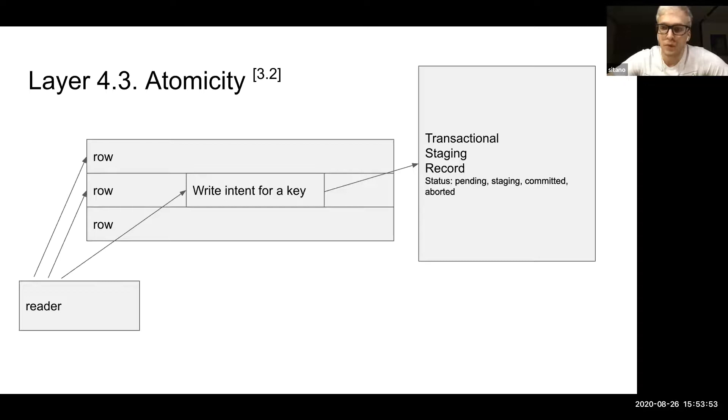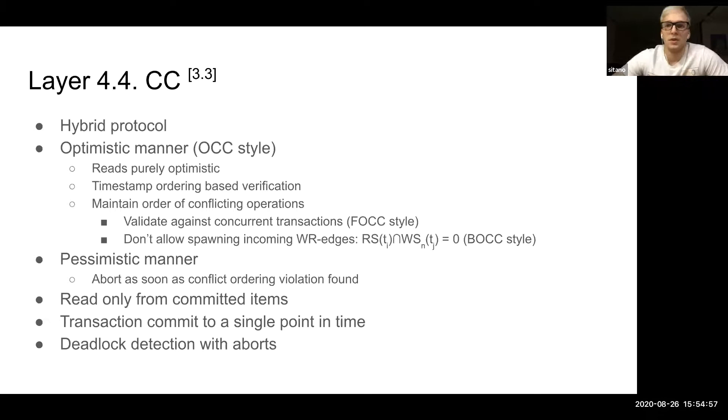The transactional staging record exists in four different statuses. The reader, when it reads the rows, can meet the write intent. The write intent is a mark of the row, meaning that there was a write to this row by some transaction. Those write intents serve as the write indirection to the transactional staging record. So the reader can follow the write intent indirection to the transactional staging record and based on the status of this record, make a decision about his behavior. For example, he can wait or he can try to abort the transaction. Or if he finds out, for example, that the transaction is committed, he can read the write intent value. This is how the conditional transaction record write switching works automatically for all the readers in the system.